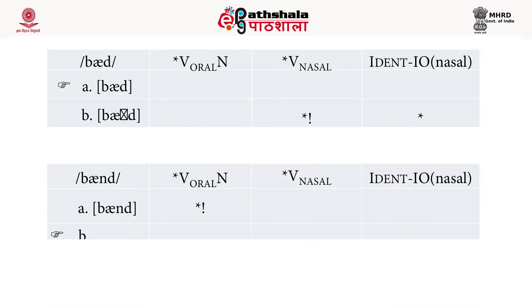The contextual markedness constraint dominates the context-free markedness constraint, which dominates the faithfulness constraint. For input /bad/, the two candidates are [bad] and [bæ̃d] (with a nasal vowel). Candidate [bæ̃d] violates the context-free NO NASAL VOWEL constraint since it has a nasal vowel with no tautosyllabic nasal present, and also violates IDENT-IO(nasal). Candidate [bad] incurs no violation at all, and hence the optimal candidate is [bad].